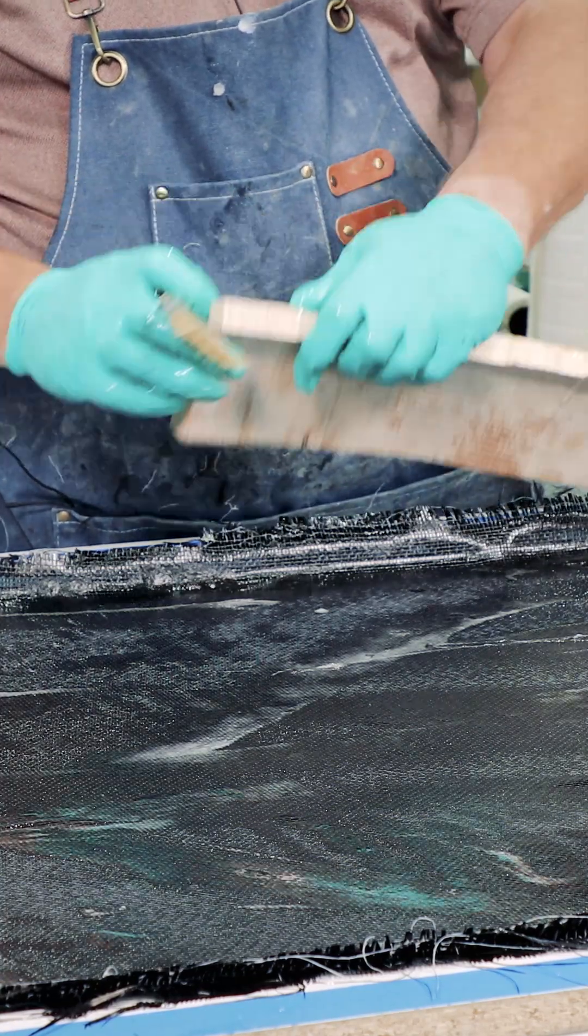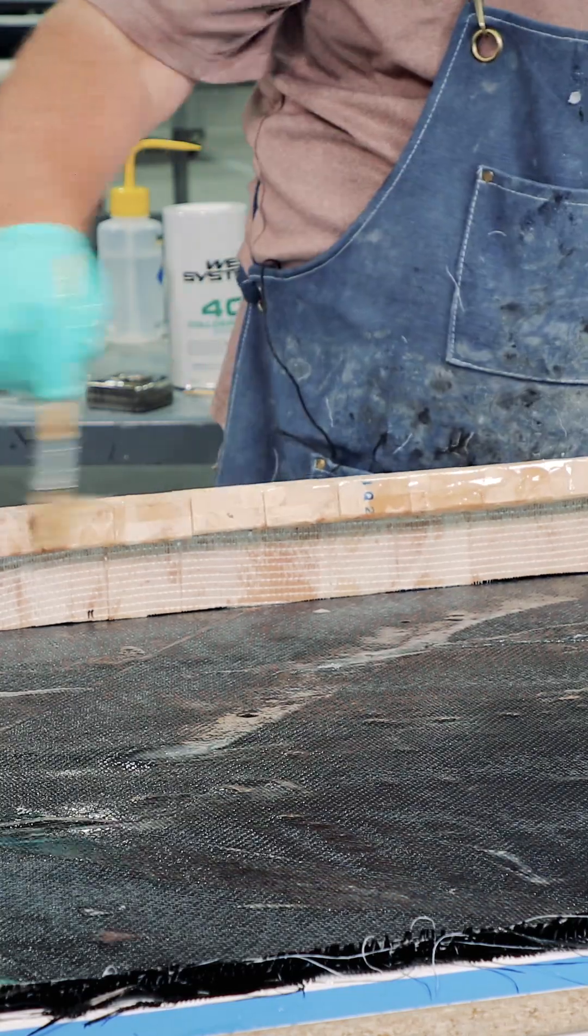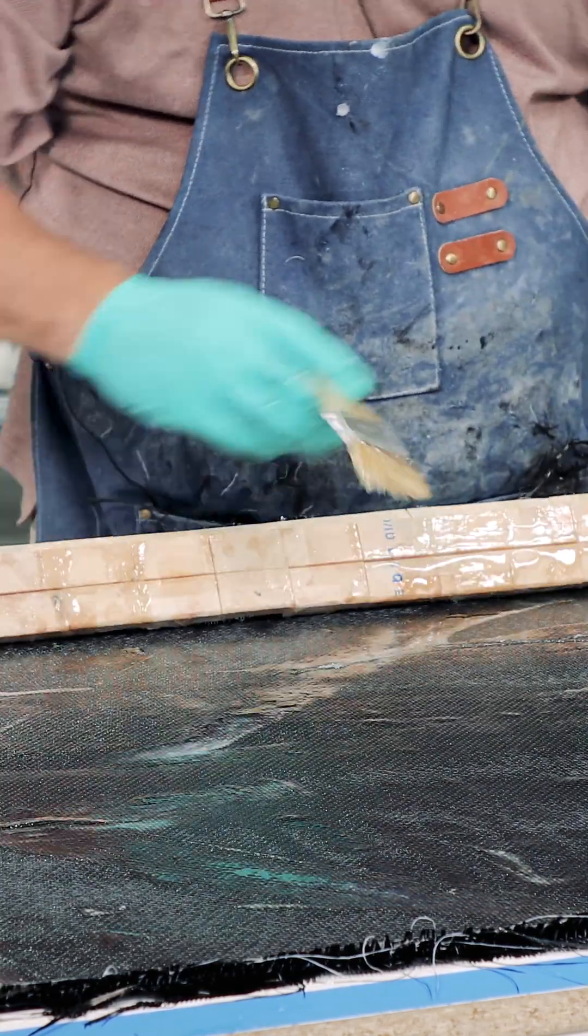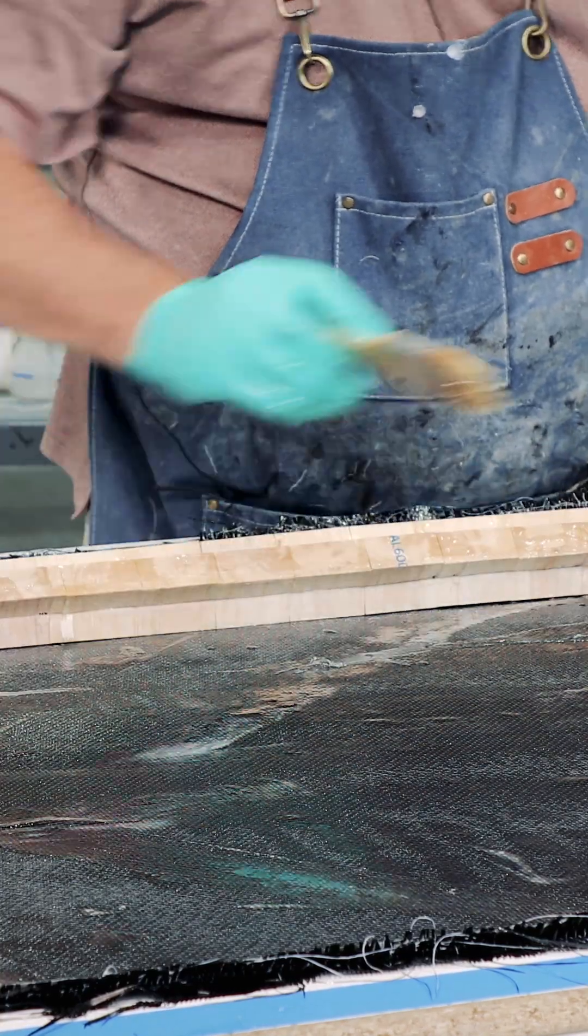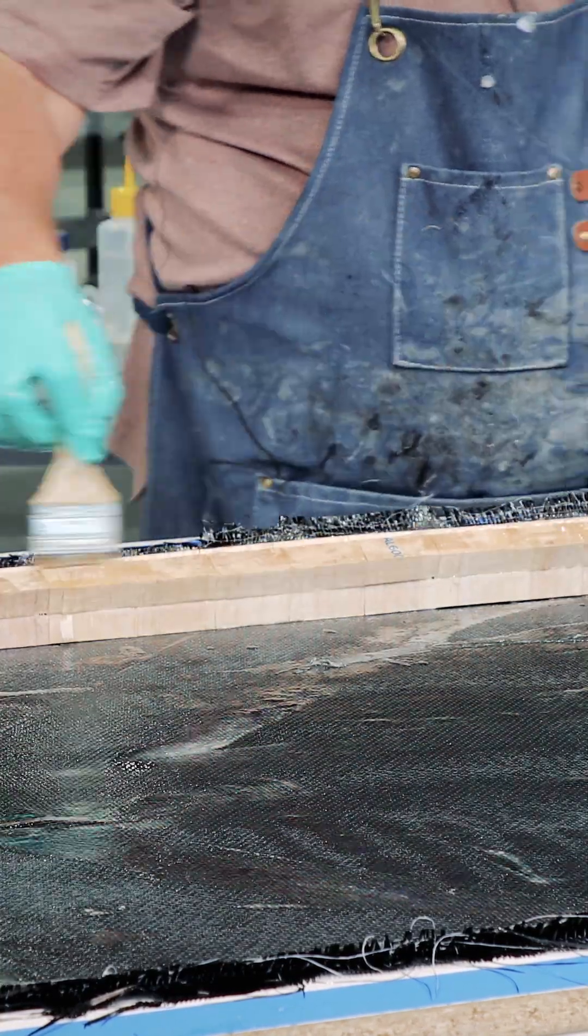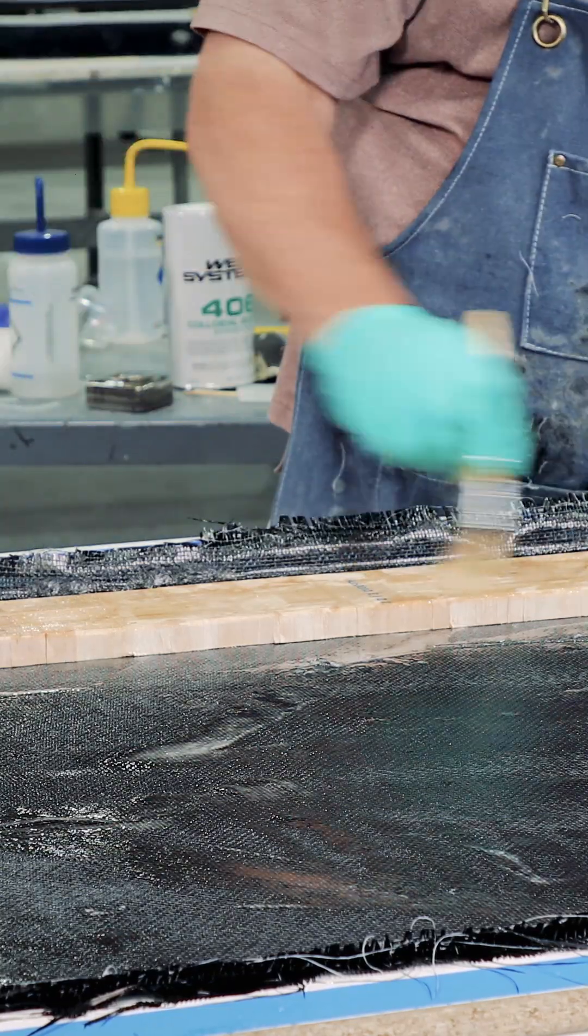By wetting out each individual cube, we actually create a waterproof cell. So if there was a puncture in the deck someplace, say someone added a fastener for a hold-down handle or something and moisture got in, it wouldn't be able to travel outside that single cube.